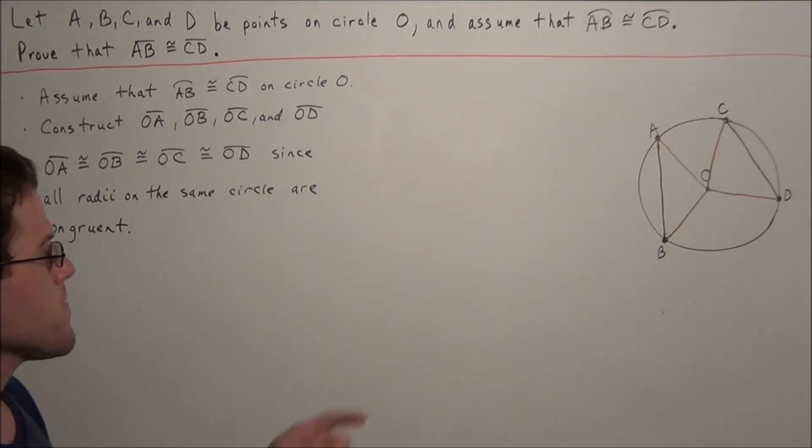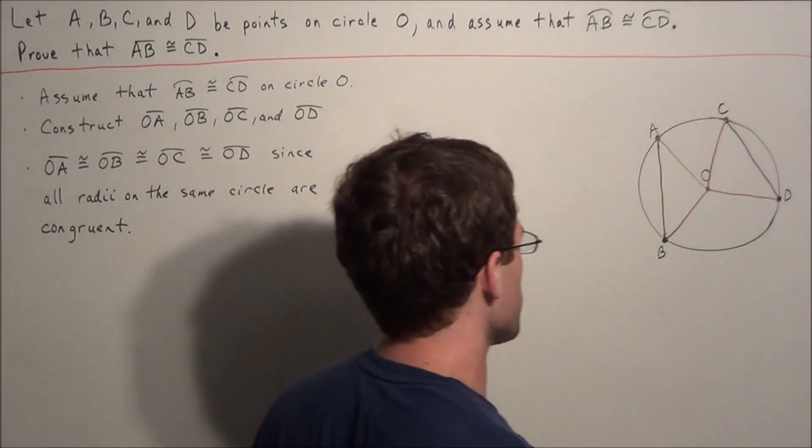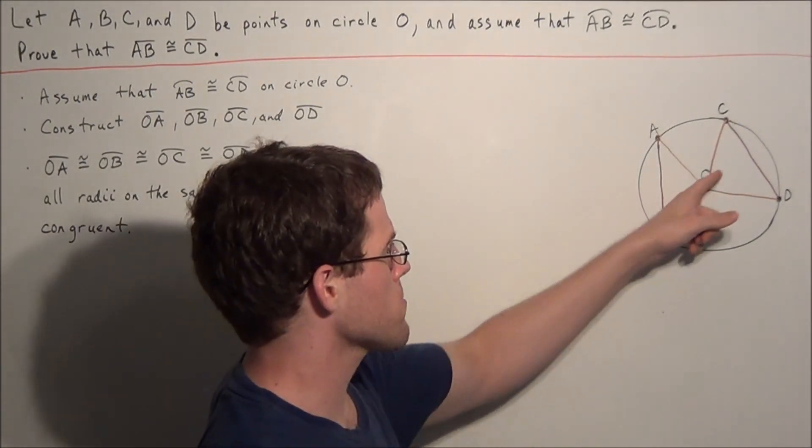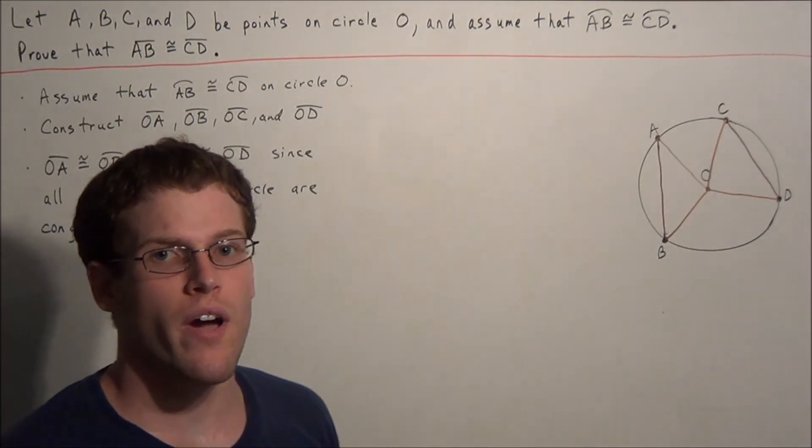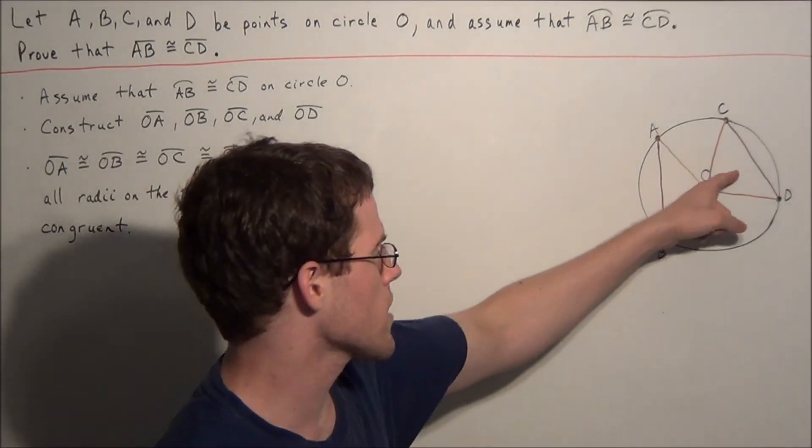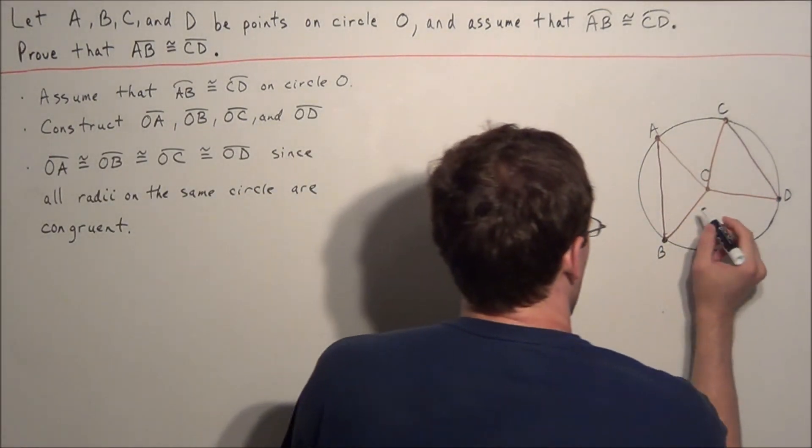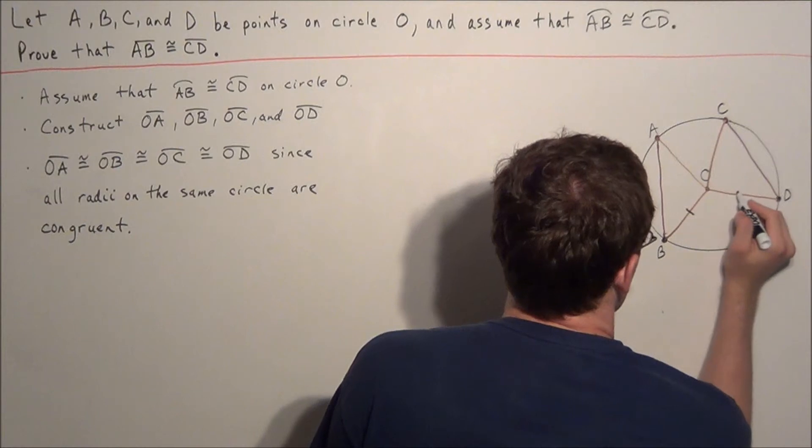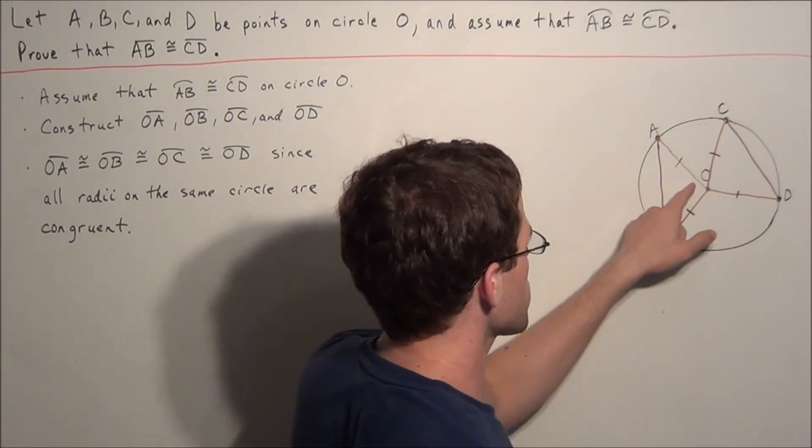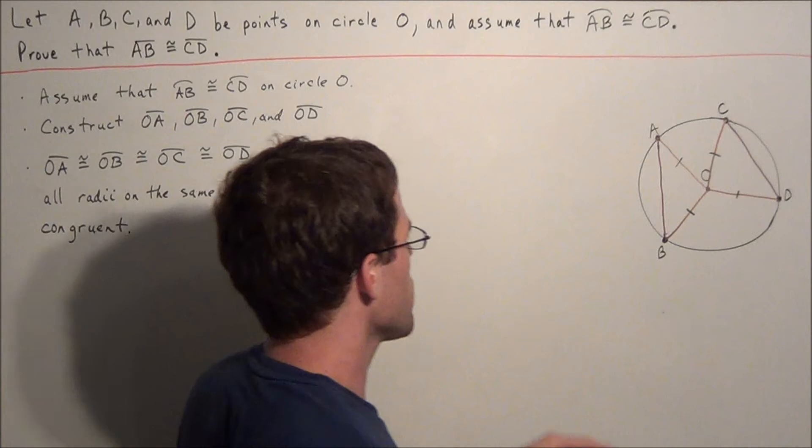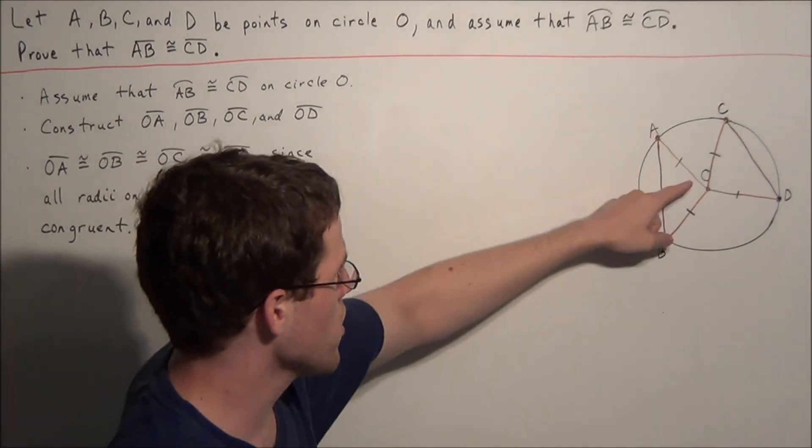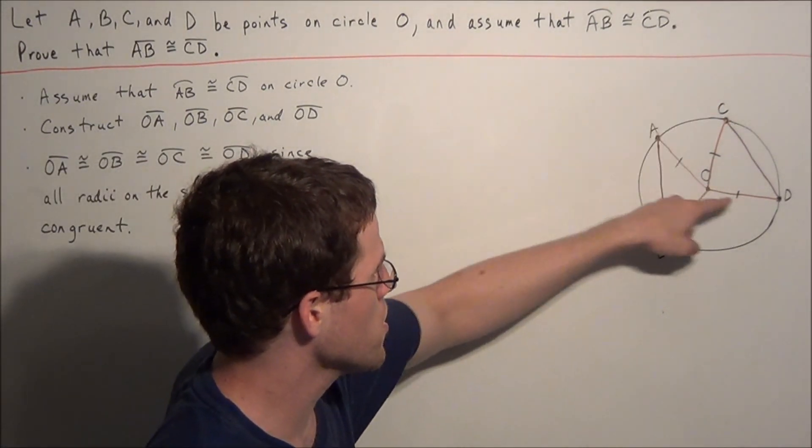So now the next thing that we could say, we could talk about angle measure. But one thing I like to do when I'm doing a proof of this type, the strategy is going to be to prove triangle congruence. So we just showed that these four segments here are equal in length. So now next we want to target these two angles. We want to target angle AOB and angle COD.